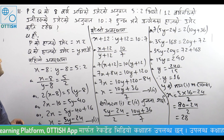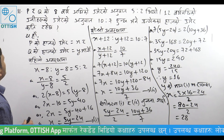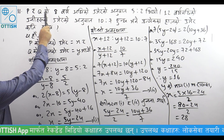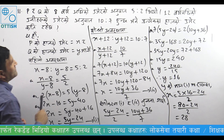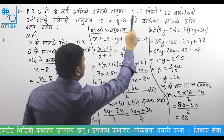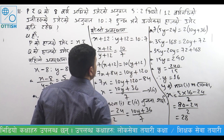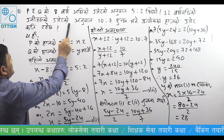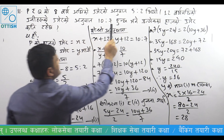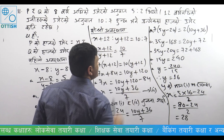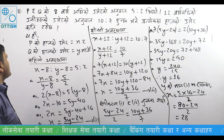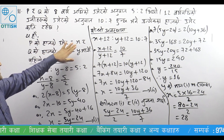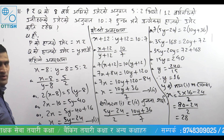Now we will take a look at the next step. P or Q is 8 years old, ratio 5 to 2. 12 years old, ratio 10 to 7. Let P be X and Q be Y.